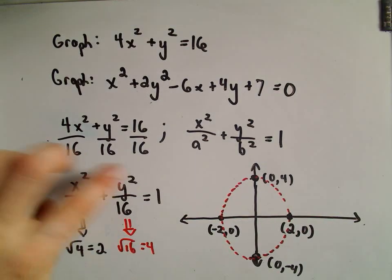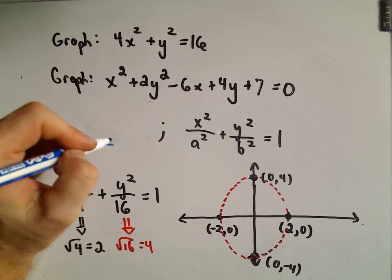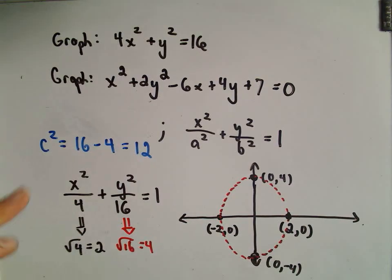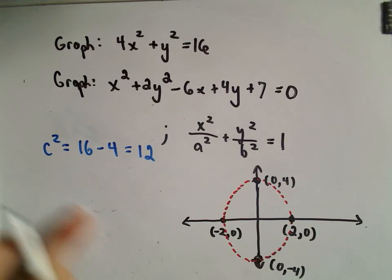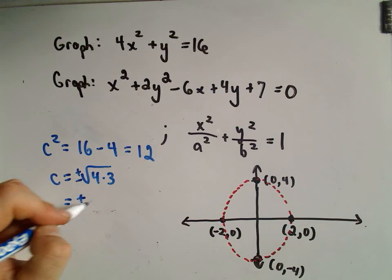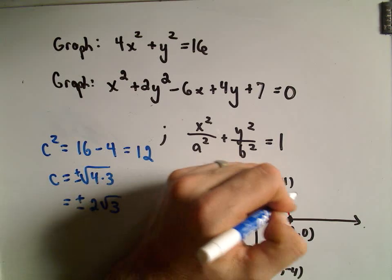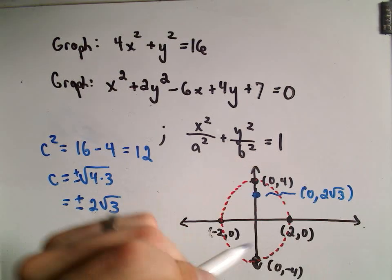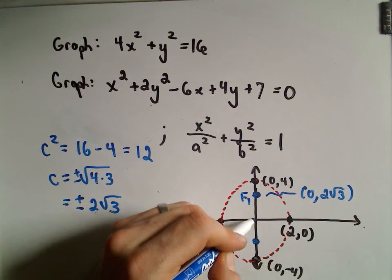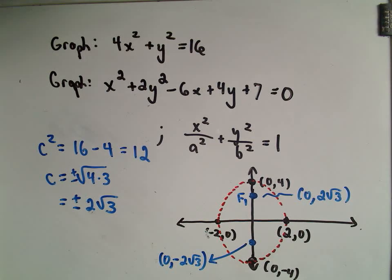If we wanted to find the foci, you just look at the numbers in the denominator. So c squared equals the bigger number, 16, minus the smaller number, 4, which gives us 12. And c equals the square root of 12, which we can write as positive or negative 2 times the square root of 3. From the center, going up 2 root 3 units gives one focus, and going down 2 root 3 units gives the other focus at (0, negative 2 root 3).